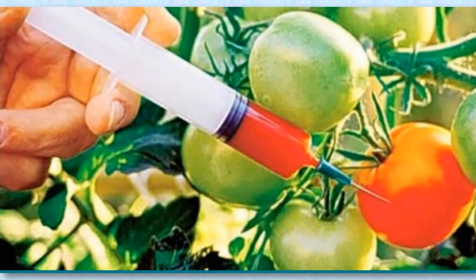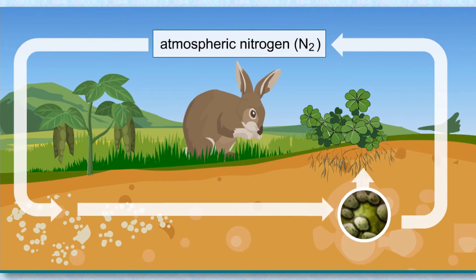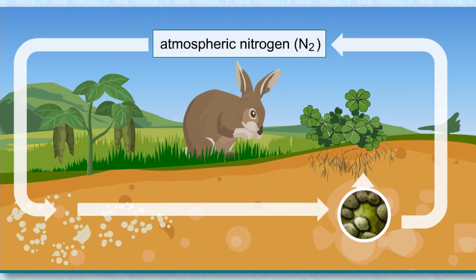Agricultural uses: Plants need nitrogen to grow; however, the nitrogen present in air cannot be used by plants directly. Some bacteria and blue-green algae are able to change atmospheric nitrogen into nitrogen compounds called nitrates, which can be absorbed by plants. This is called nitrogen fixation. These microbes enrich the soil with nitrates and increase its fertility, and are known as biological nitrogen fixers.